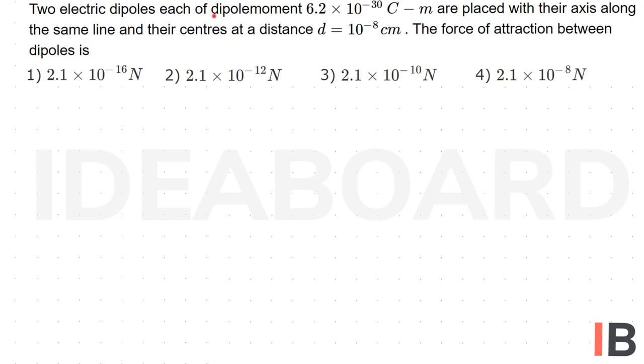Two electric dipoles, each of dipole moment 6.2 × 10^-30 Cm are placed with their axes along the same line and their centers at a distance d equal to 10^-8 cm. The force of attraction between the dipoles is.